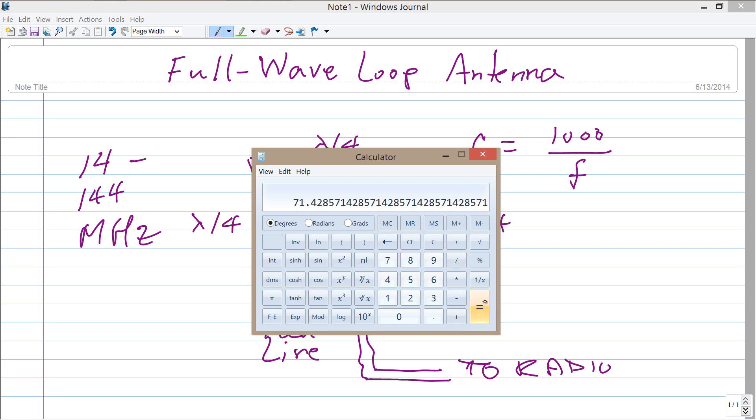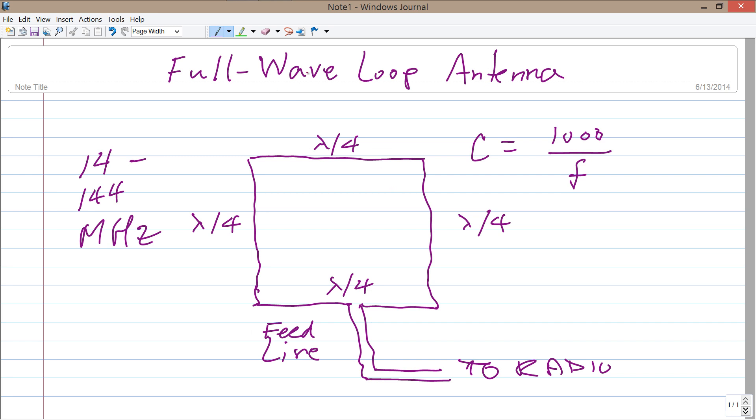71 and a half feet. So each side of the antenna or each leg of the square would be approximately almost 18 feet long, 17.8 feet long.